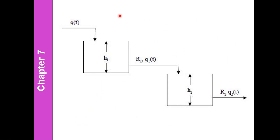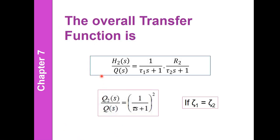The representation of a non-interacting two-tank system in series is shown here. Q is the volumetric flow rate of liquid introduced into the first tank, h1 is the level of liquid in the first tank, and Q sub 1 of t is the volumetric flow from the first tank through linear resistance one. Tank 2 is labeled the same way as tank 1. The volumetric flow from tank 1 is discharged into the atmosphere and then introduced into the second tank.